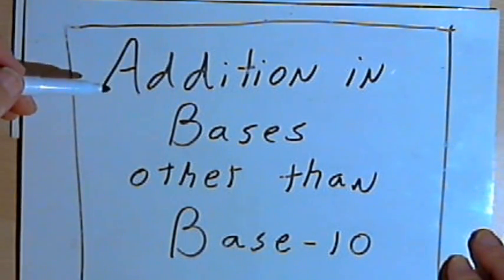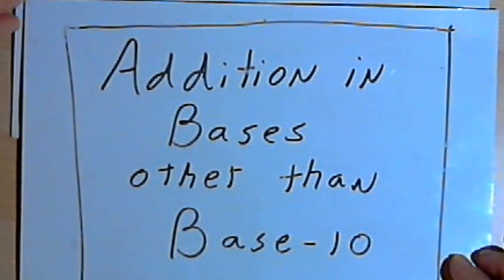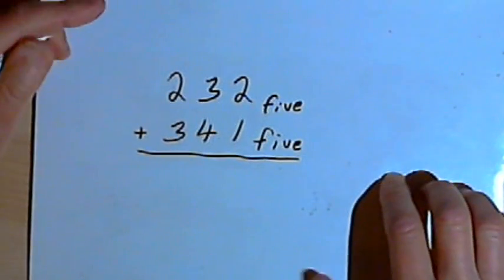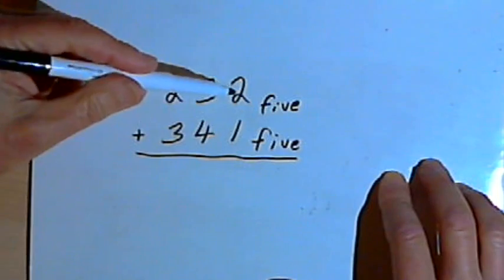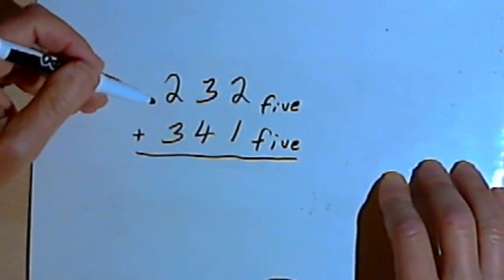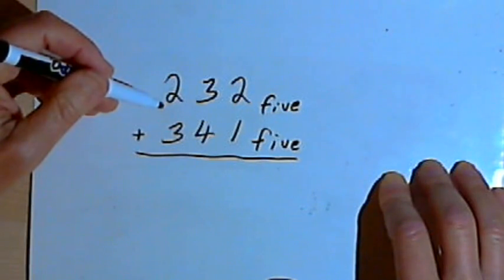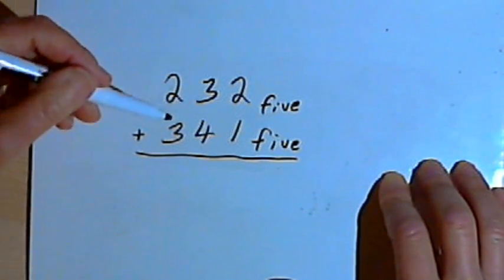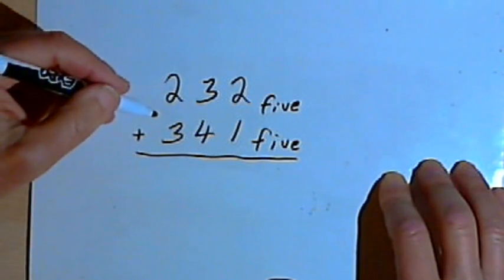This video is going to be about addition in bases other than base 10. So here's the first problem. We've got these two base 5 numbers, 232 and 341. And let's say that I actually live in a base 5 world, where everybody uses base 5. And I've got to add these two numbers, but I haven't bothered to memorize my addition facts.